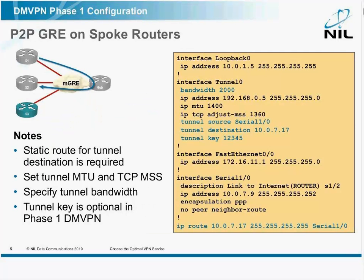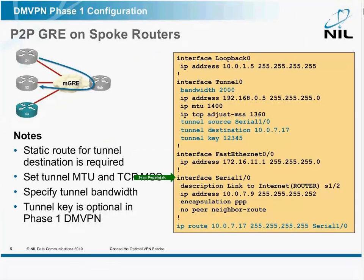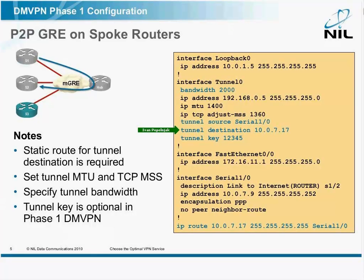Let's go into the configuration details now. On spokes, we have point-to-point GRE tunnels, which means you typically have a loopback interface, a LAN interface, the internet interface, and then you create a tunnel interface. Because it's a point-to-point tunnel, you have to specify tunnel source and tunnel destination. Don't use an IP address for tunnel source — use an interface.